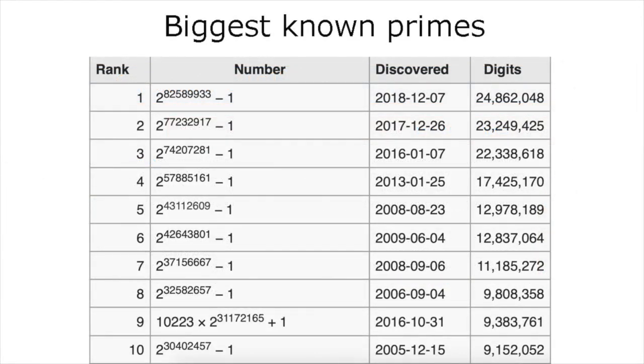Of the 10 largest prime numbers found to date, nine are Mersenne primes. The current champion, discovered in January 2018, is 2 to the 82589933 minus 1. Written out in full, it has close to 25 million digits, enough to fill several volumes of the last print edition of Encyclopædia Britannica.